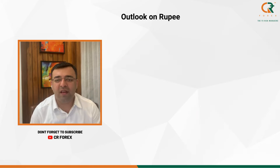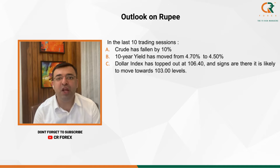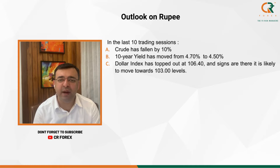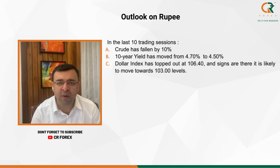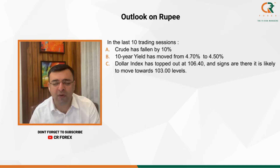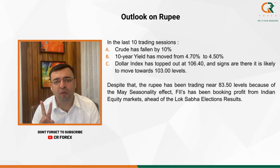Now let us discuss the outlook for the Rupee. In the last 8 to 10 trading sessions, crude oil has fallen by 10 percent. The 10-year US yield has come down from 4.70 to 4.5, and the dollar index has topped out at 106.40 and come down to around 105. We are further expecting it to go down to 102. Despite all of this, the Rupee is still trading near 83.50 due to two reasons.